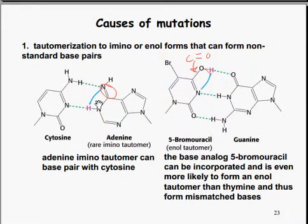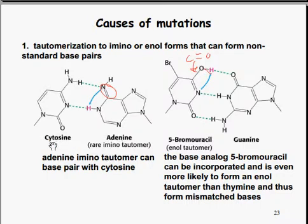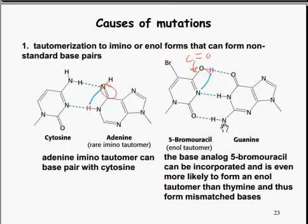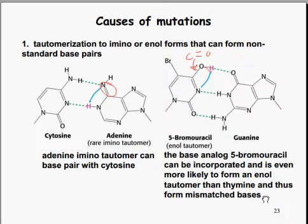Causes of mutations include tautomerization of the amino or enol forms that can form non-standard base pairs — occasionally cytosine will bond with adenine, which normally doesn't happen (it's A to T, C to G). The adenine amino tautomer can base pair with cytosine through two linkages, which it's not supposed to do under normal circumstances. Another less common cause is 5-bromouracil, which can bond with guanine and is even more likely to form the enol tautomer than thymine, forming mismatched bases along three different bonds.